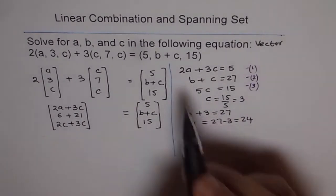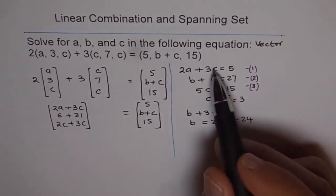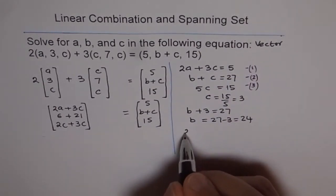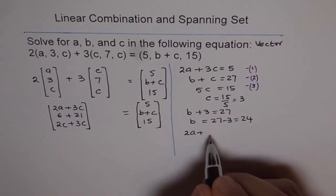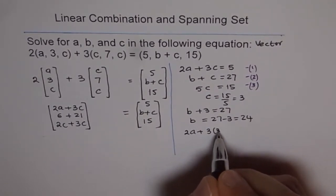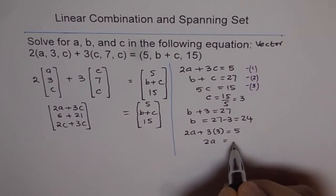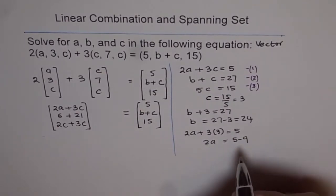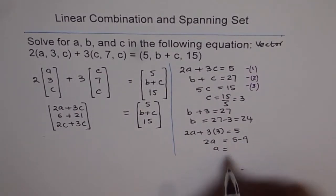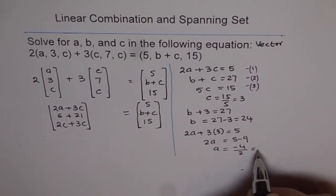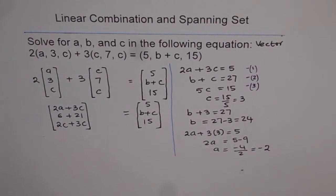To get a also, we can substitute the value of c in equation 1 and get our answer. We have 2a plus 3 times 3 equals to 5. So, 2a equals to 5 minus 9 and a equals to minus 4 divided by 2 and this gives us minus 2 as our answer.